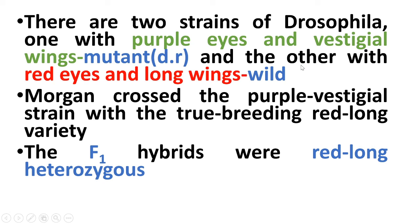One type has long wings and is the dominant condition. The other one has purple vestigial wings. The true breeding is the same as the dominant condition.